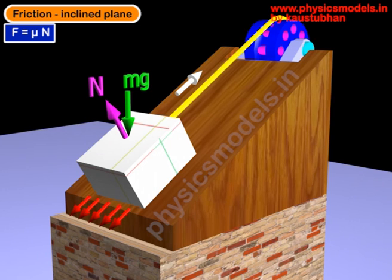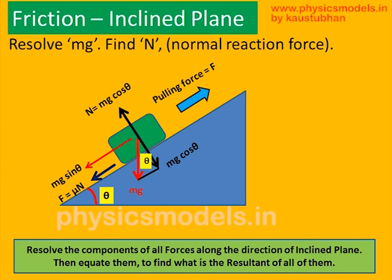Now let's look at a 2D analysis of how to resolve these forces. From a side view, first draw the weight mg downwards. The angle of the inclined plane, theta, will be equal to the angle between the weight line mg and the black double-edged arrow, which is perpendicular to the inclined plane and passes through the center of the block. These two thetas will always be equal.